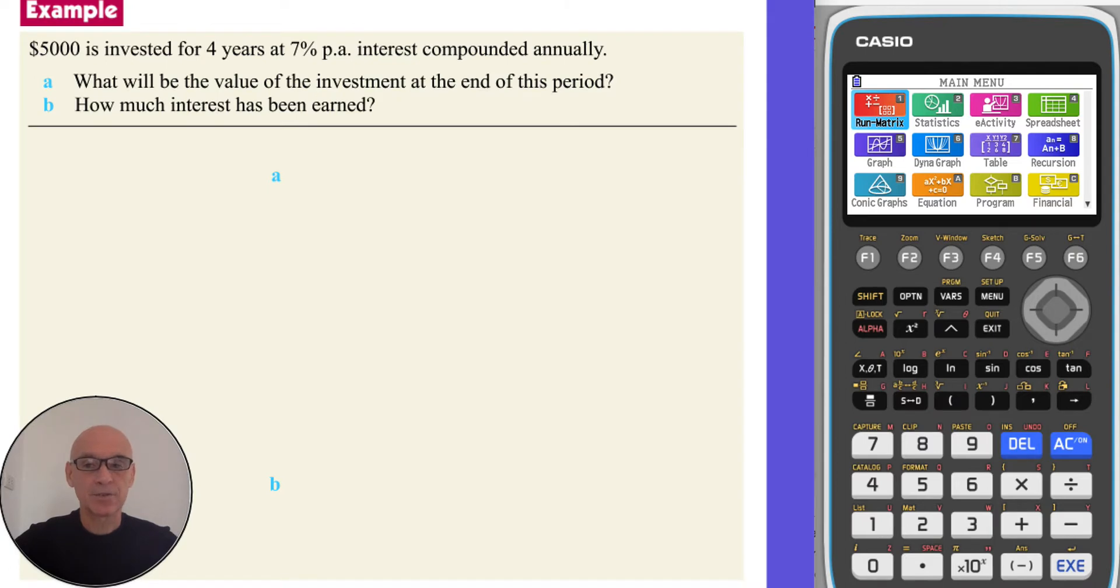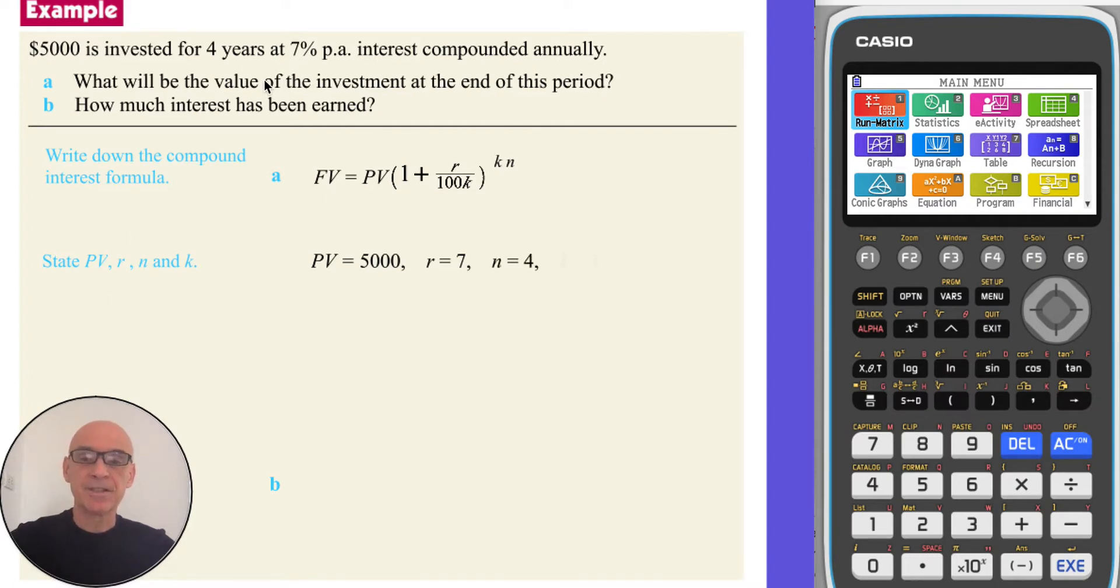In part A of this question, we're asked to find the value of the investment at the end of four years. If we begin by writing down the compound interest formula and then state the present value PV, which is $5,000, the interest rate, which is 7, the number of years N, which is 4, and the number of compounds per year K. And since it's compounded annually, K is equal to 1.